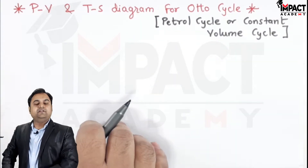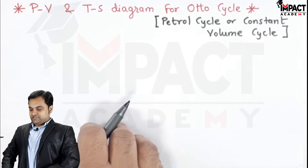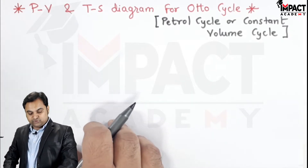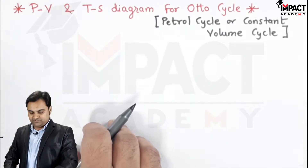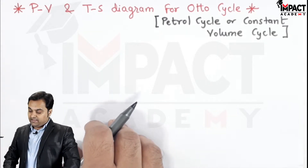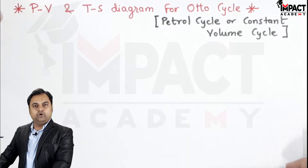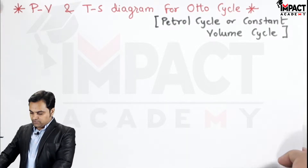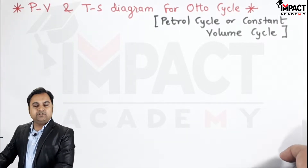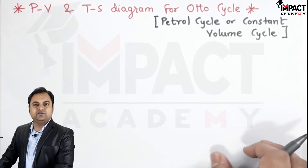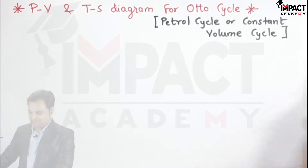The Otto cycle is also called the petrol cycle, used for petrol engines, and it is also called the constant volume cycle. Now I'll mention the processes which are used in the Otto cycle.